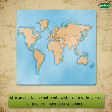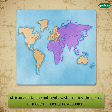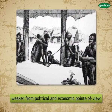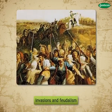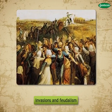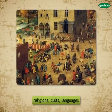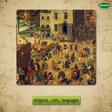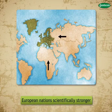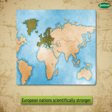Reason 10 — Weakness of Asian and African Nations: Although the nations belonging to the African and Asian continents were comparatively vaster during the period of modern imperial development, they were weaker from political and economic points of view. Having been infected by invasions and feudalism, great damage was done to the agriculture and business of these nations. The societies were also divided by religions, cults, languages, etc. The European nations, being scientifically stronger, took full advantage of the limitations of these nations and brought them under their imperial reign.